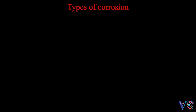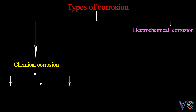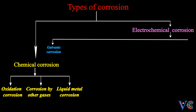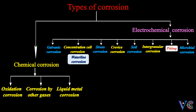Corrosion is basically of two types: chemical corrosion and electrochemical corrosion. Chemical corrosion is mainly of three types: oxidation corrosion, corrosion by other gases, and liquid metal corrosion. Electrochemical corrosion can be further studied as galvanic corrosion, concentration cell corrosion, stress corrosion, crevice corrosion, soil corrosion, intergranular corrosion, pitting, and microbial corrosion. Please note that waterline corrosion is a form of concentration cell corrosion.